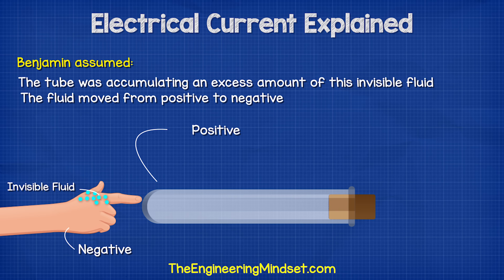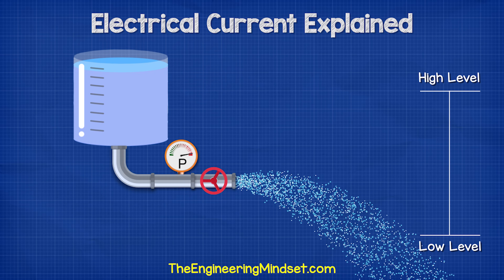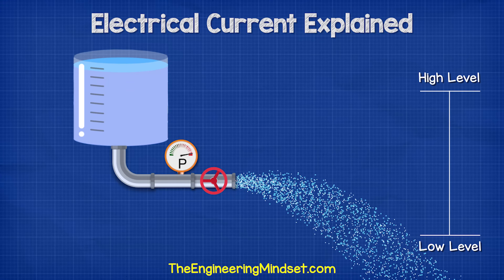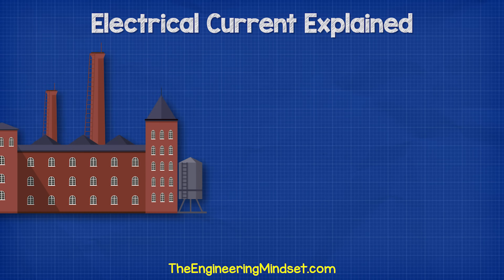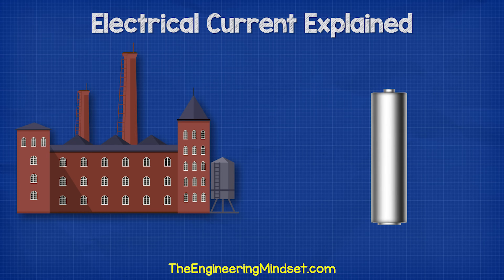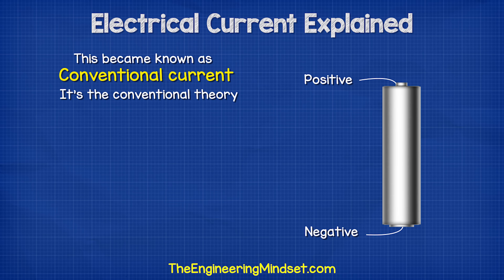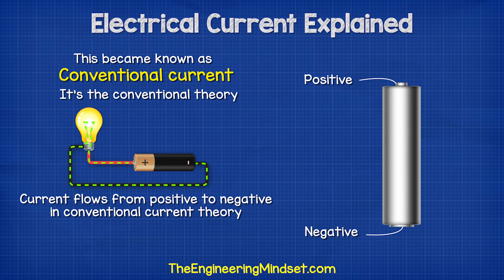Franklin said electricity flows from positive to negative, and this does make sense because water is a fluid and it flows from a high level to a low level. Soon, manufacturers started producing batteries based on his work, and they also said this end is positive and this end is negative. We still use this naming convention to this day. This became known as conventional current because it's the conventional theory of how electricity flows.